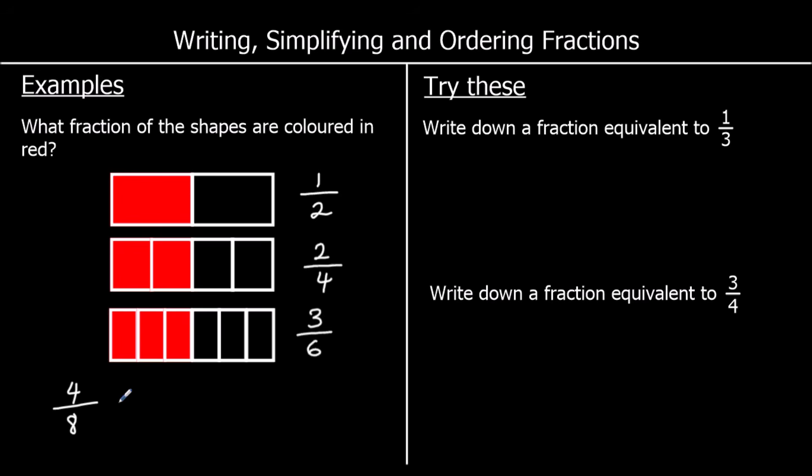If you multiply the top and bottom by five, you'll get five out of ten, and that is another fraction equivalent to one half. If you had five tenths of a cake, you've got the same as one half of a cake. Okay, two questions for you to try: write down a fraction equivalent to one third, and write down a fraction equivalent to three quarters.